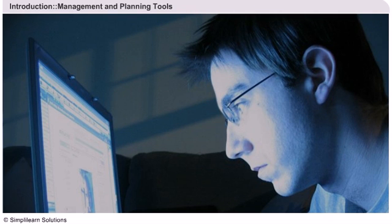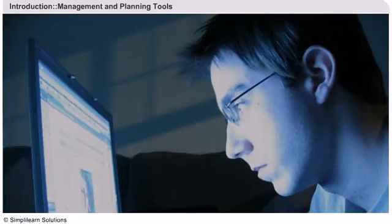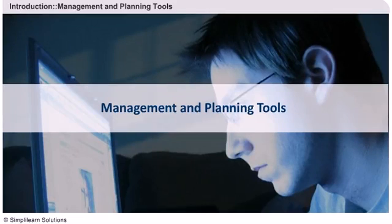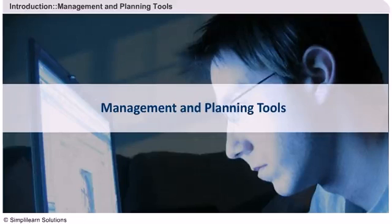Hello, and welcome to the third session of Simply Learn's eLearning course on Six Sigma Green Belt Training. In this session, we will be discussing management and planning tools. Session 3 is divided into three lessons: Lesson 3, Lesson 4, and Lesson 5. We have already discussed Lesson 1 and Lesson 2 in Session 2. So let's move forward and have a look at the agenda for Lesson 3.